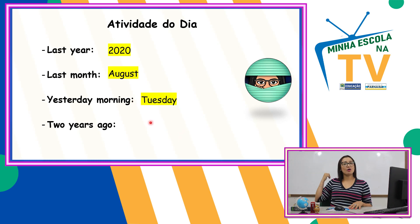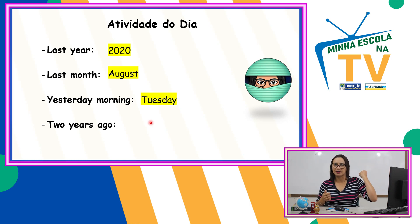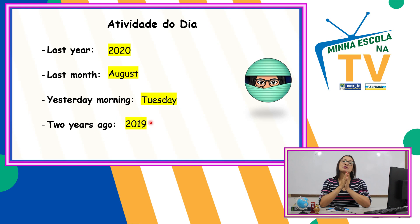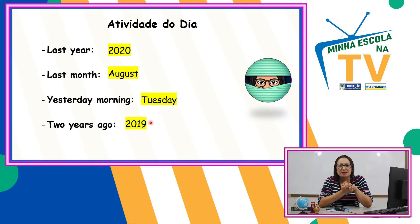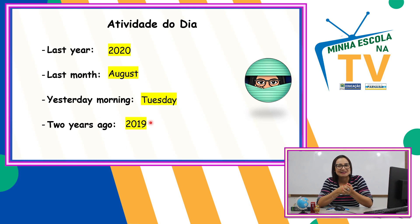Two years ago — dois anos atrás. Nós estamos em 2021. Dois anos atrás foi 2019. Espero que vocês tenham aprendido um pouquinho dessas expressões que indicam o passado e aprendido nossos verbos no passado.